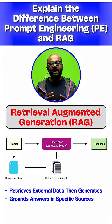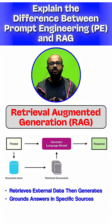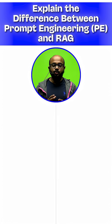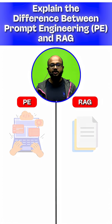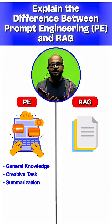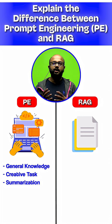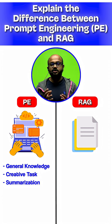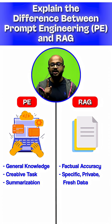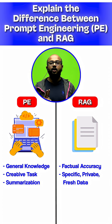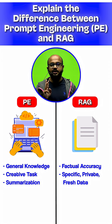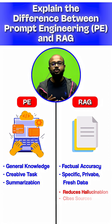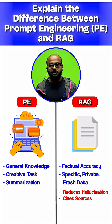This is like handing someone a book and asking them to answer a question using only that book. So, prompt engineering is a good use case for general knowledge, creative tasks, or summarization. Use RAG when you need factual accuracy based on specific, private, or up-to-date dynamic data. With RAG, you can also reduce hallucinations and enable source citation.